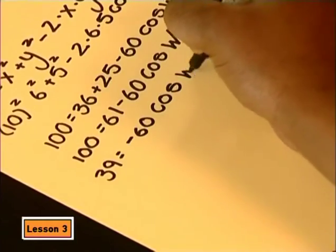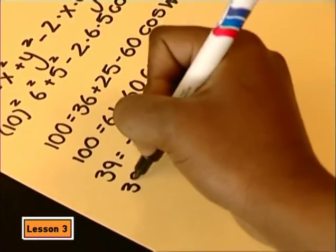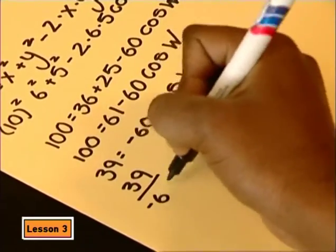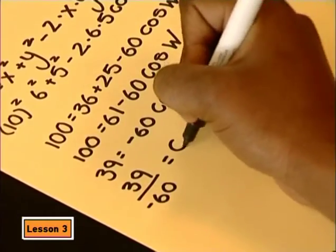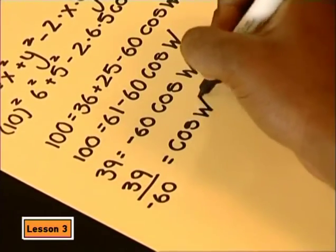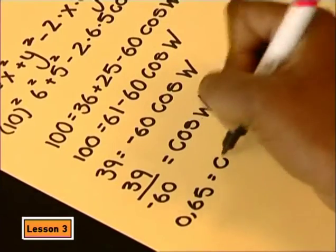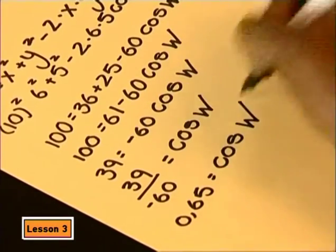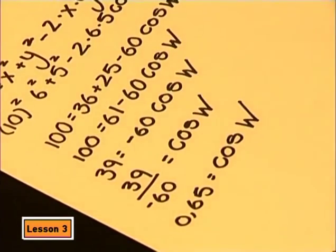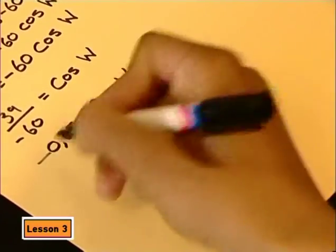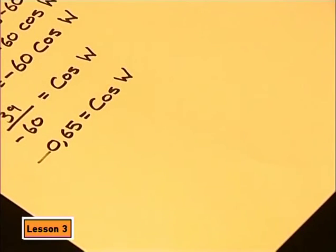Now we've got 39 equals to negative 60 cos W. That doesn't look right. That's okay. To get cos W on its own, we can divide by negative 60 on both sides. That's 0.65 equals cos W. Well, you've fallen into another trap that many people fall into. Keep your negative. Right. So negative 0.65 equals cos W.